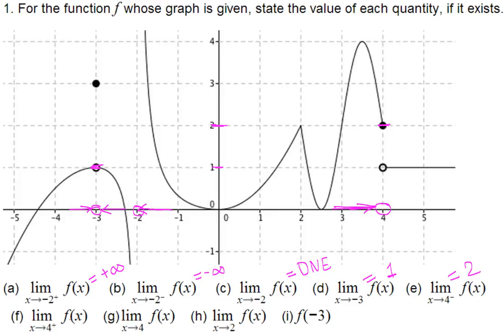Part f: what is the limit when x approaches 4 from the right? Same place but approaching from the right — we are at level 1, so this is 1. For part g, what is the limit when x approaches 4? From the right it's 1 and from the left it's 2 — they are different, so the limit does not exist.